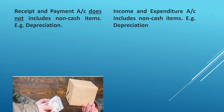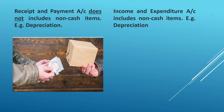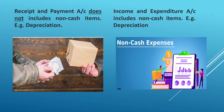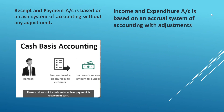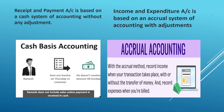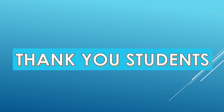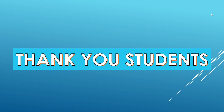Receipt and payment account does not include non-cash items — for example, depreciation. Income and expenditure account includes non-cash items such as depreciation. Additionally, receipt and payment account is based on a cash system of accounting without any adjustments, whereas income and expenditure account is based on an accrual system of accounting with adjustments. Thank you students — like, share, and subscribe for more content like this.